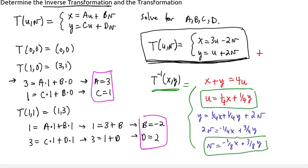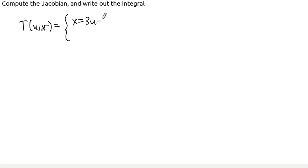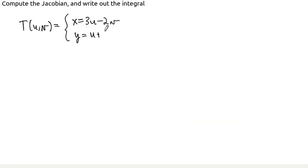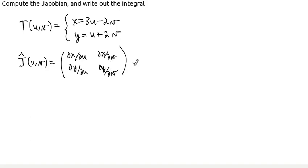We'll compute the Jacobian first and write out the integral. So remember our transformation T of (u,v) was equal to - let's just go back and remember it - x is 3u minus 2v, and y is equal to u plus 2v. Alright? And we need to compute the Jacobian of this so that we know how this affects the area of our shape. And so remember the Jacobian as a matrix, J hat of (u,v), this is just the matrix of partial derivatives. ∂x/∂u, ∂y/∂u, ∂x/∂v, and ∂y/∂v.